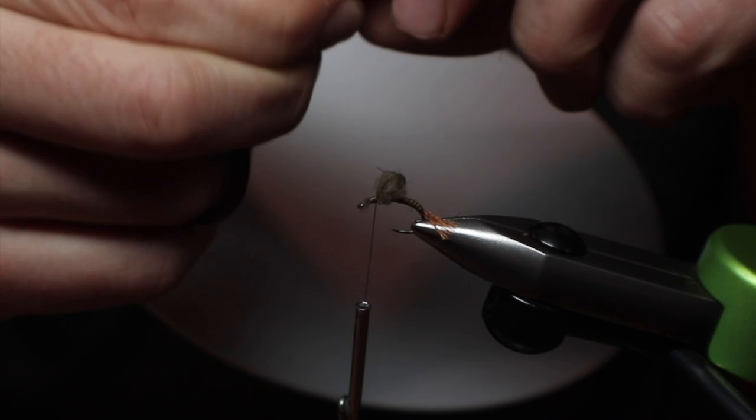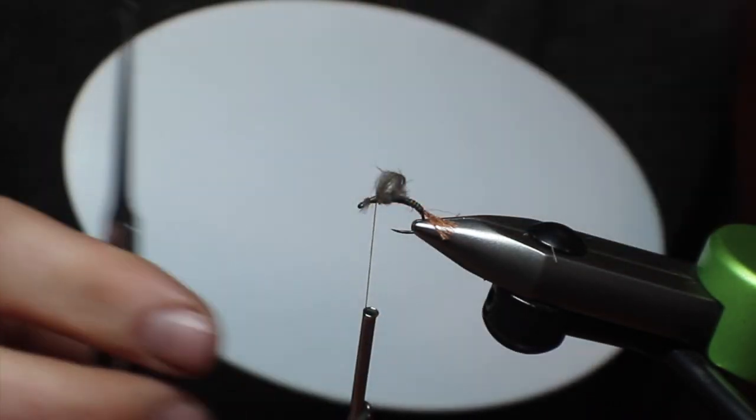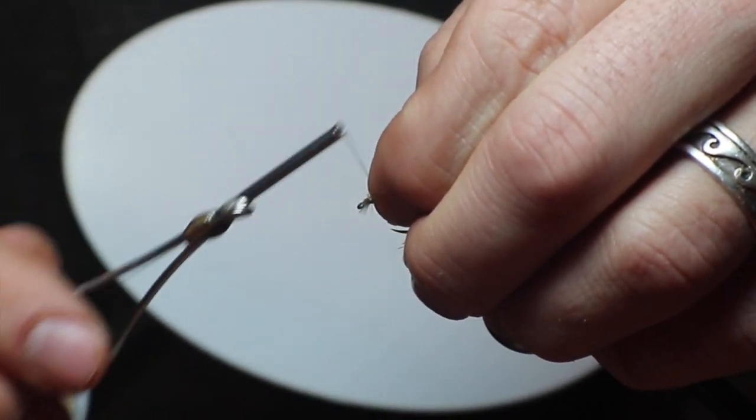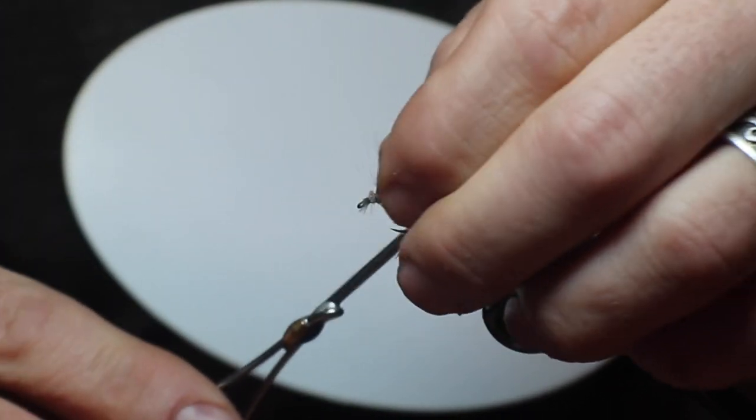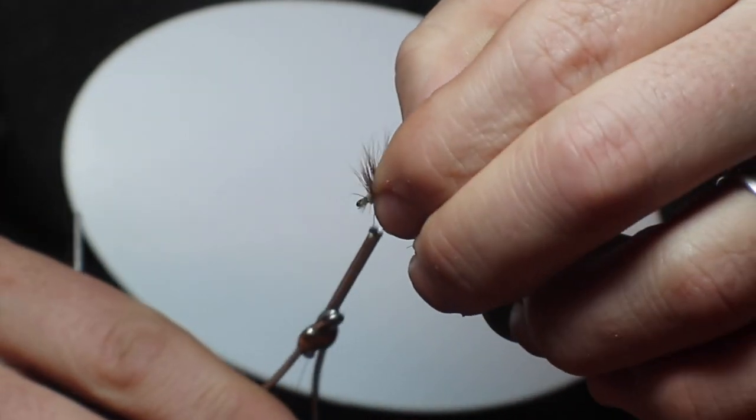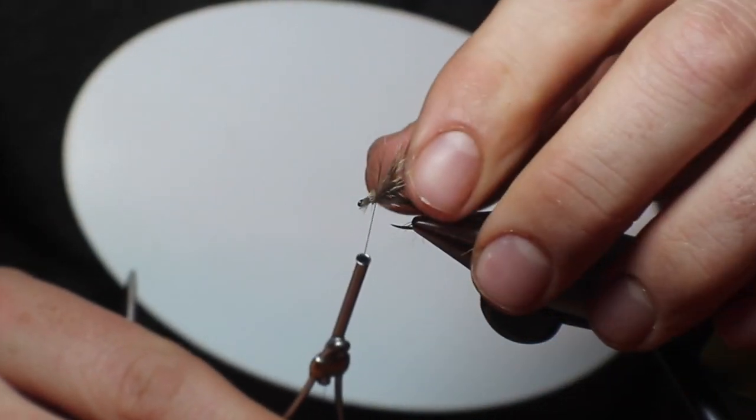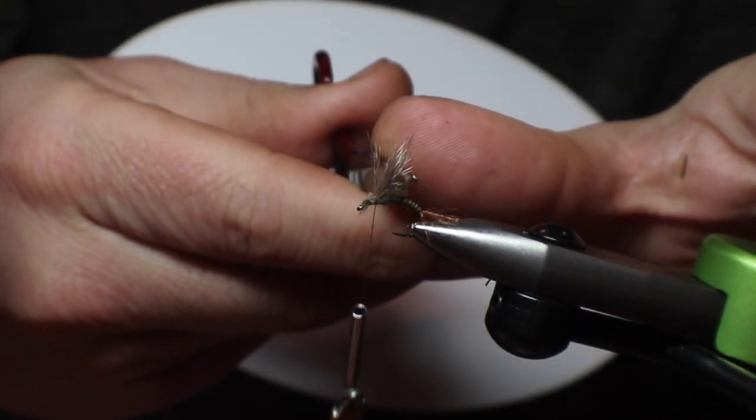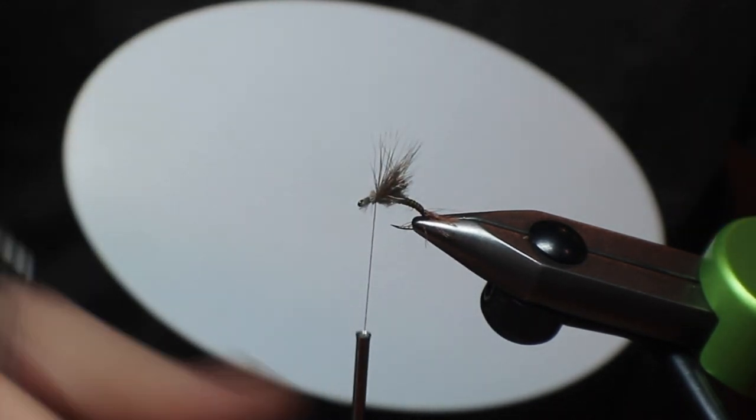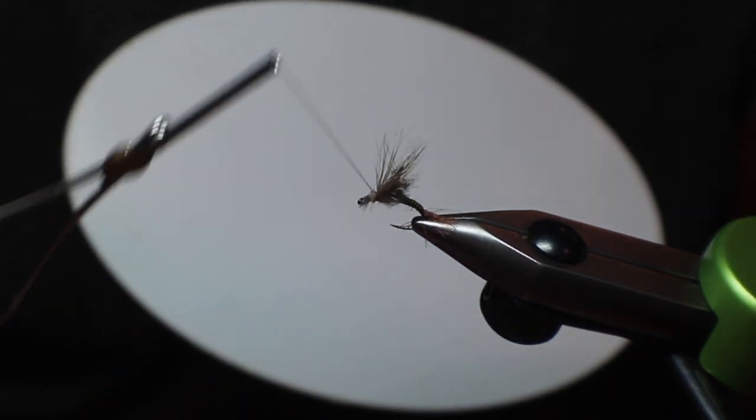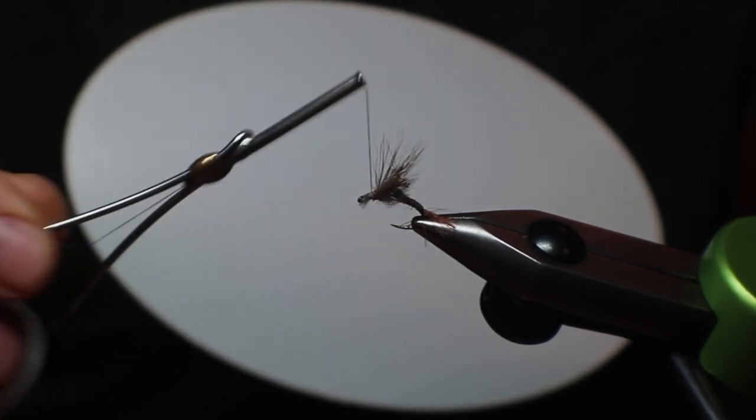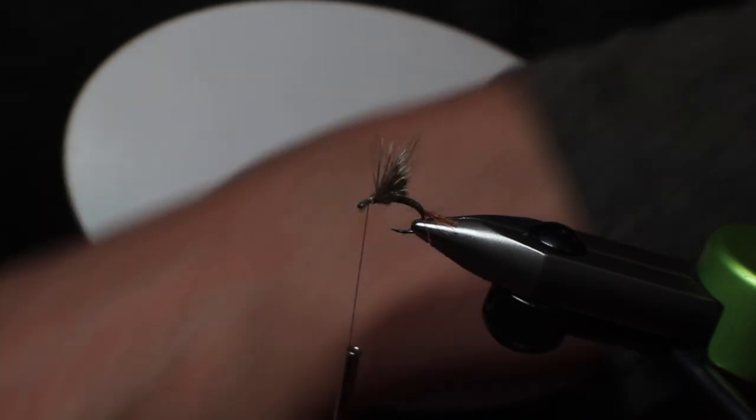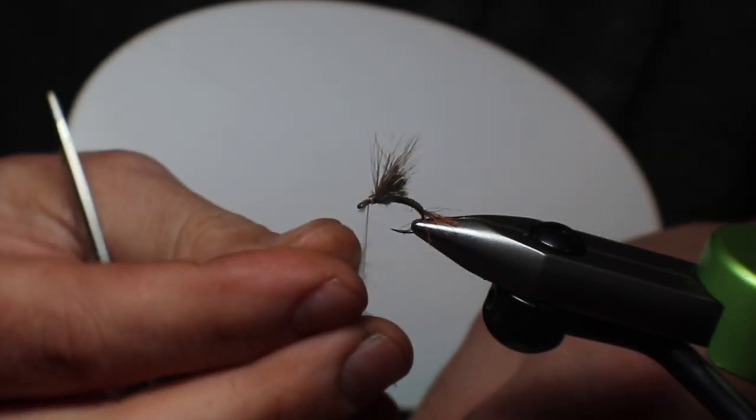Come in with a soft wrap, soft wrap, and then flare. We want that to stand up. The hump, the CDC hump there, holds it up. A couple more. Break free. Super buggy look already. And now we're gonna go through those tips, excellent, and back with the beaver dub on the head.